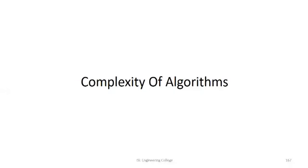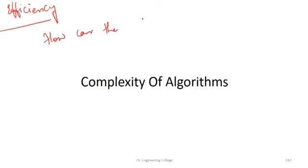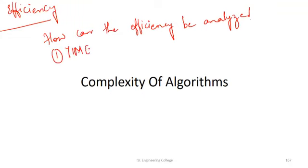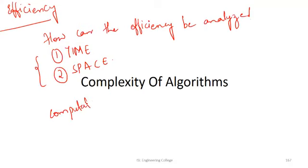In the last class we saw the properties of an algorithm and a few algorithms. One of those properties was efficiency — an algorithm must be efficient. Now, how can efficiency be analyzed? One measure of efficiency is time and the other is space. Whenever we talk about these two measures, that is known as computational complexity.